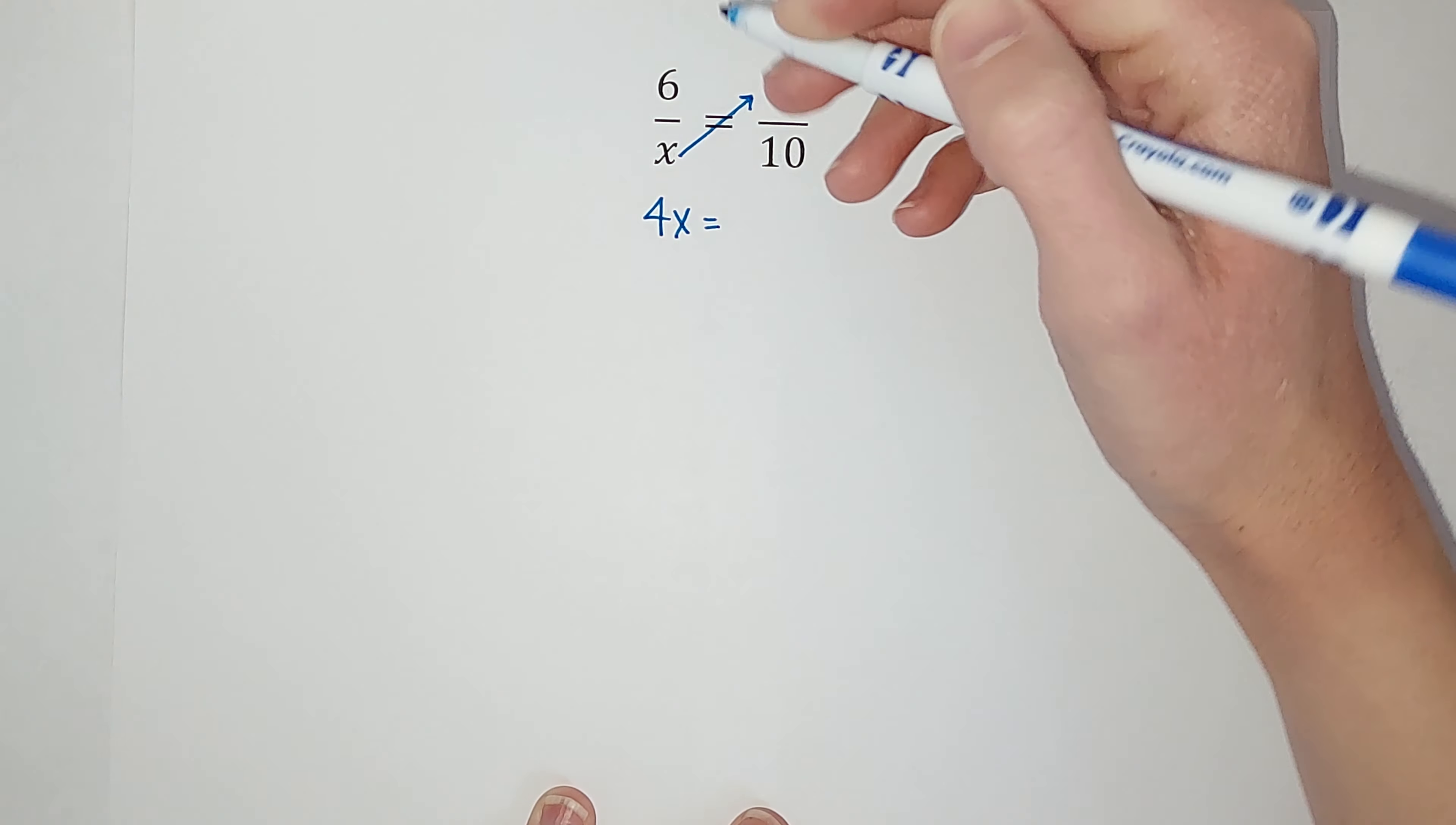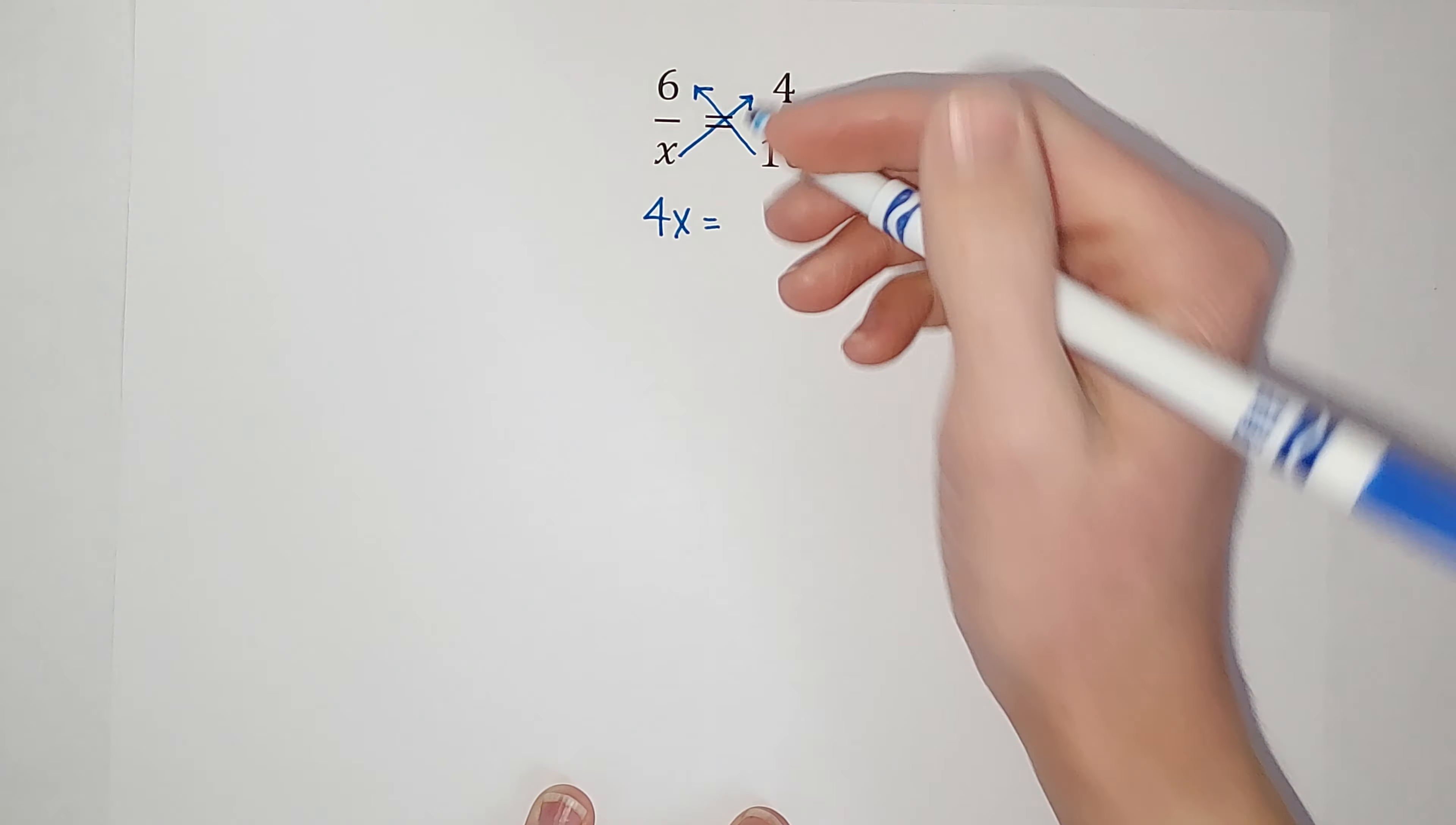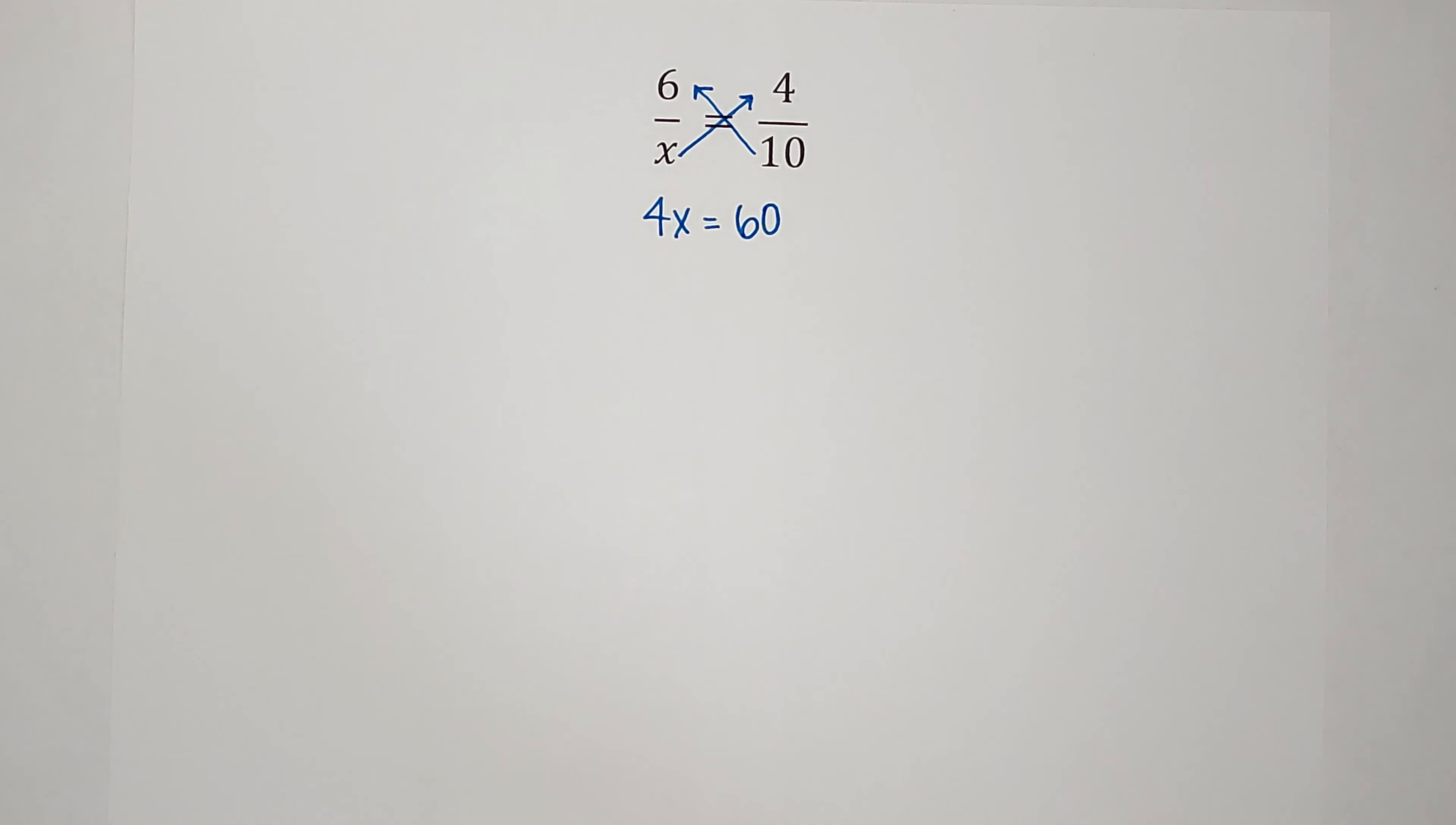So x times 4 gives me 4x, and that's going to be equal to 10 times 6, which is 60.